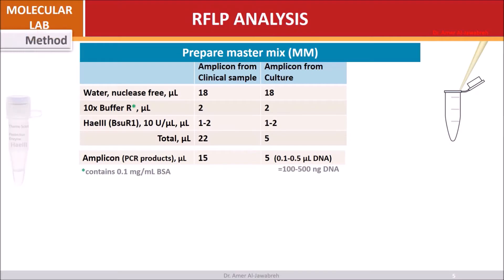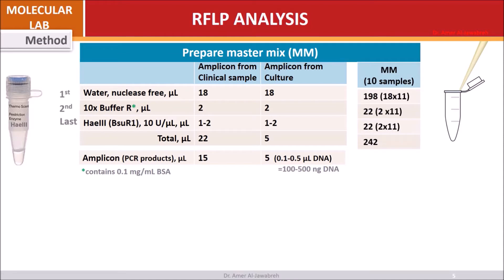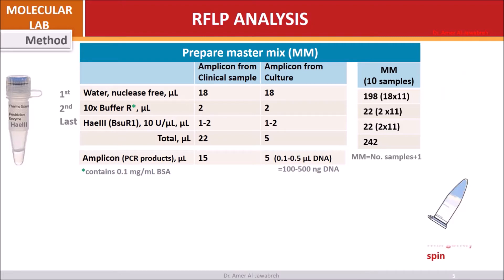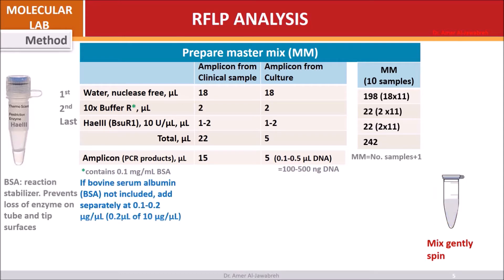Method: Prepare master mix as shown — nuclease-free water, buffer containing bovine serum albumin (BSA), and HaeIII enzyme added last. Mix gently and spin. If BSA as a stabilizer is not included, add separately at a concentration of 0.1 microgram per microliter.